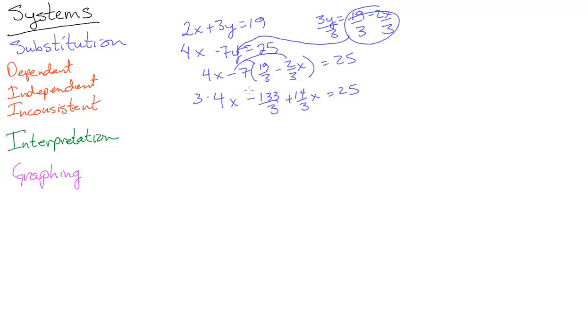Nice thing is you will always be left with a denominator. This is giving you great practice for your linear equations. Times by 3 and you get 12x minus 133 plus 14x equals 75. 12x and 14x, that's 26x equals, add 133 over there and we are left with 208.